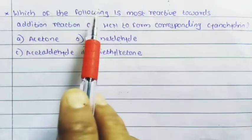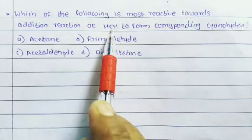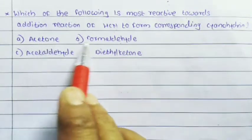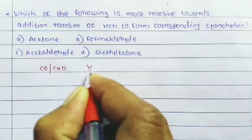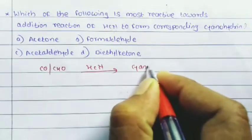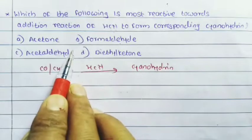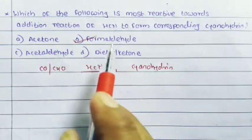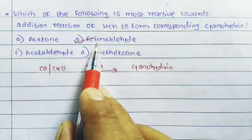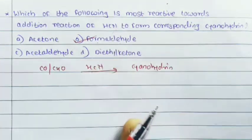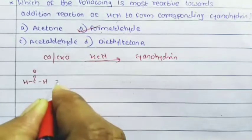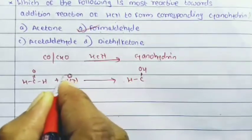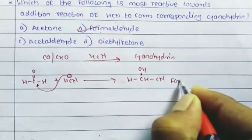Next question: which of the following is most reactive toward addition of HCN to form the corresponding cyanohydrin — acetone, formaldehyde, acetaldehyde, or diethyl ketone? Aldehydes and ketones react with HCN to form cyanohydrins. Formaldehyde (HCHO) is the most reactive toward HCN addition. In the reaction, the C=O group is converted to C-OH with CN⁻ attaching to the carbonyl carbon, forming formaldehyde cyanohydrin.